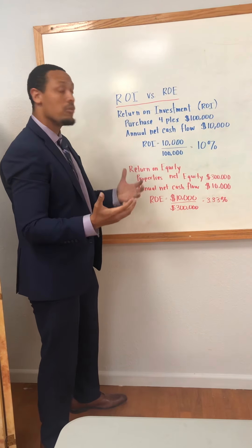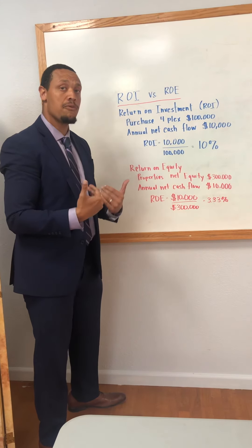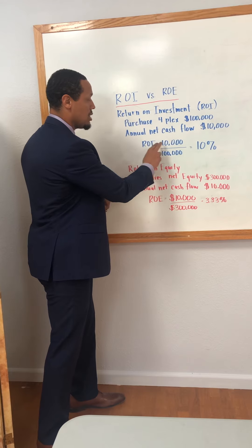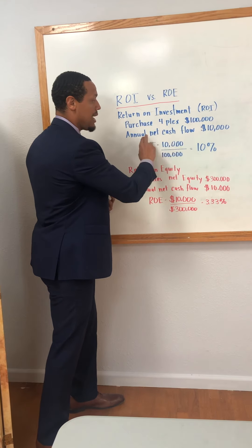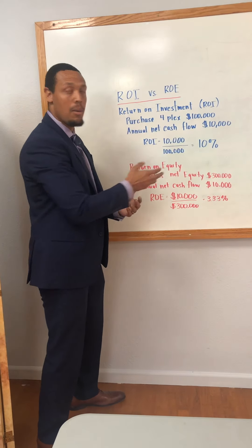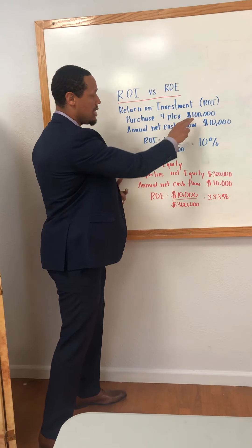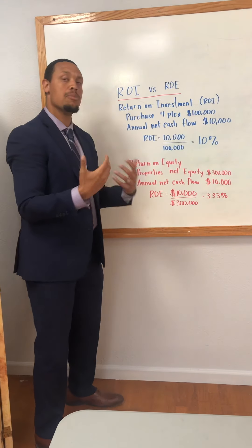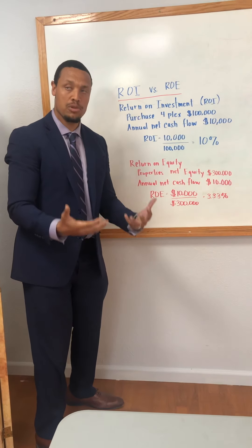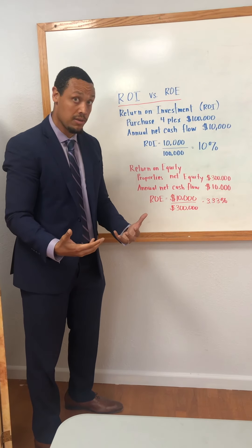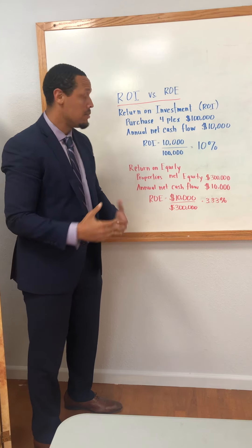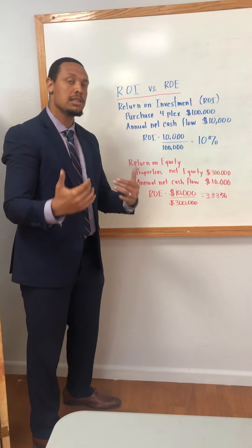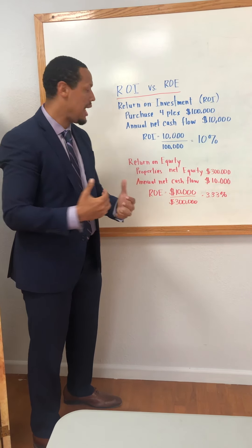So the calculation for return on investment is I take my $10,000 cash flow and I divide it by the $100,000 that I put down. That equals 10% — 10% return on investment. Pretty good right now if you can get that in the Bay Area, but stick with me here.